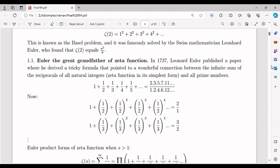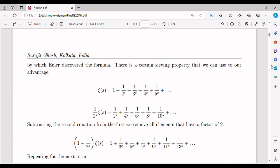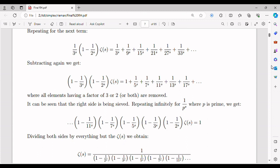To extend the domain of the Riemann zeta function, we make use of a concept called analytic continuation. Analytic continuation allows us to extend the definition of a function to a larger domain. In the case of the zeta function, we can extend it to the entire complex plane except for the point s equal to 1, where it has a simple pole. Now, here's where it gets interesting.